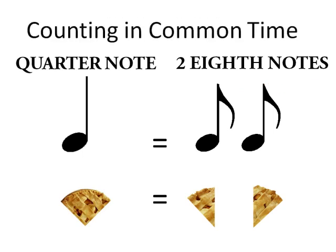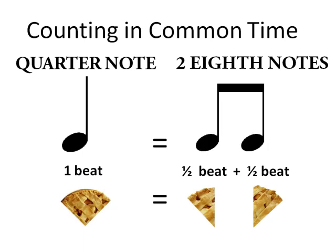In common time, the quarter note gets one beat. This means that each eighth note gets half of a beat, and put together, they combine for a total duration of one beat.